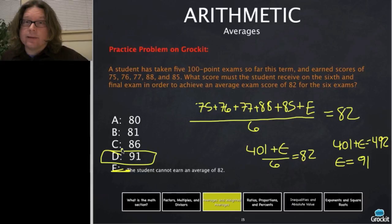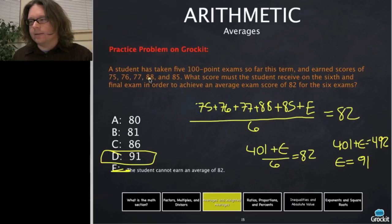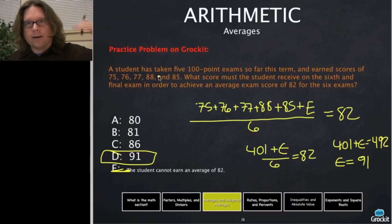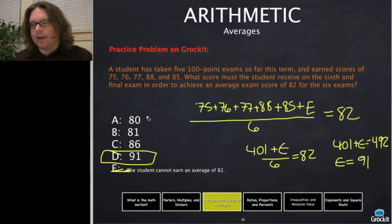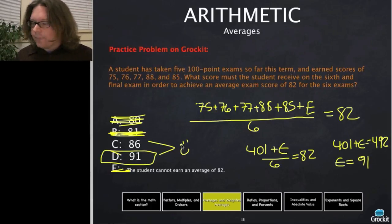You can also eliminate answer choices using logic: three of the five exams are below 82 and significantly so, while only two are above by a total of 6-9 points. The sixth score must be above 82 to raise the average, so you can eliminate choices A and B right away, leaving a 50% chance of guessing correctly just from thinking it through.